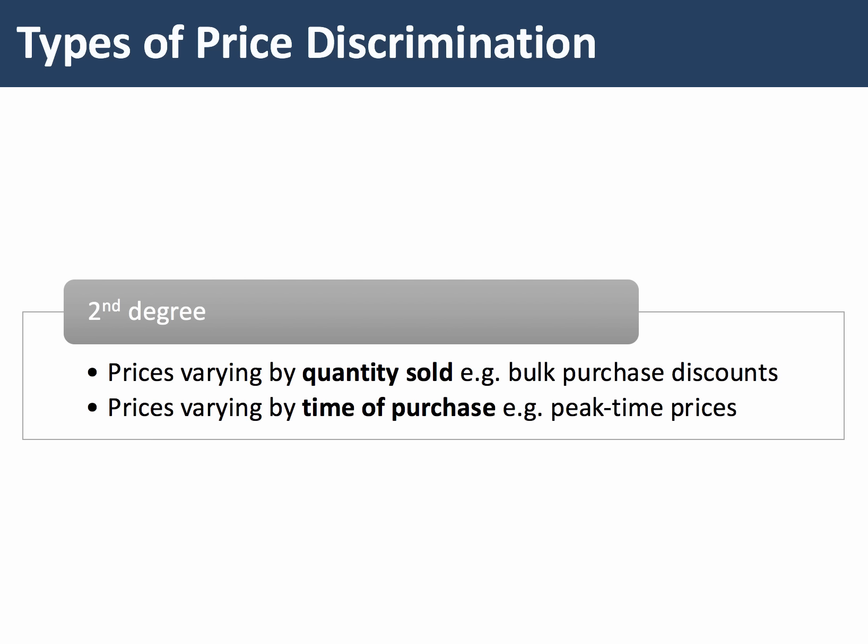Second degree price discrimination basically involves a business selling off a package or block of a product — perhaps deemed to be at surplus capacity — and selling those blocks, those big quantities, to consumers at a much cheaper price. So a bulk purchase discount would be a good example. Prices may also vary by time of purchase, and in this video we'll look at peak versus off-peak pricing.